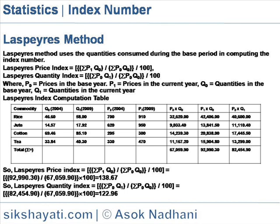Where P0 is the price in the base year, P1 is the price in the current year, Q0 is the quantity in the base year, and Q1 is the quantity in the current year.